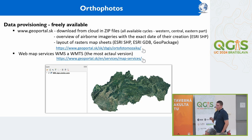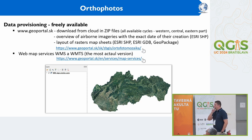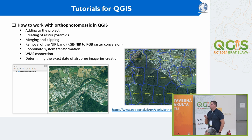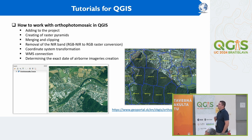If you want complete orthophotos for all of Slovakia, you can download them as zip files from our GeoPortal. You can also find an overview of available images with the exact date of creation. Additionally, web map services are available for easy use in applications. We also made a tutorial for working with these rasters in QGIS, covering functions like creating pyramids, merging, clipping rasters, coordinate transformation, WMS connection, and removing the near-infrared band from four-channel rasters.